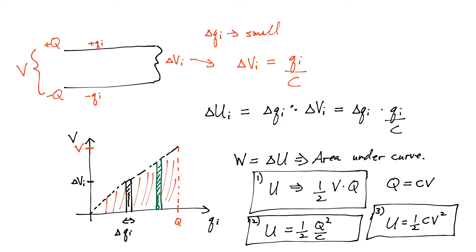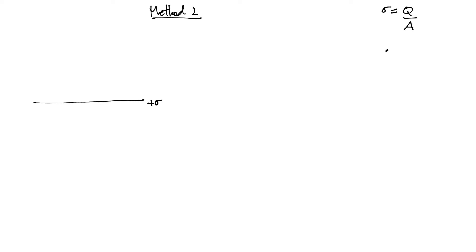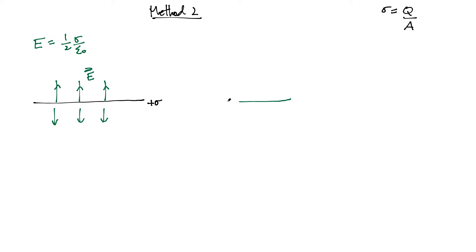For method two, I'm going to start by considering a positively charged plate with some charge density sigma — the charge density is the total charge on the plate divided by the area. A positively charged parallel plate produces a uniform electric field pointing away from it, with magnitude one half sigma over epsilon zero, because I have a single plate. Now I want to consider placing a negative plate just above it, almost basically touching it, with charge density minus sigma, to produce a capacitor.